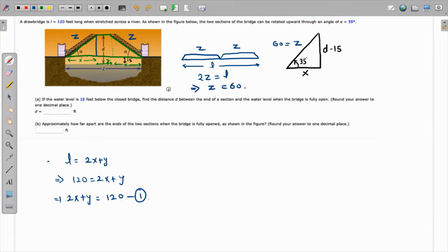We can get the value of x. The value of x will be cos of 35 equals x over 60, so the value of x is 60 cosine of 35 degrees.